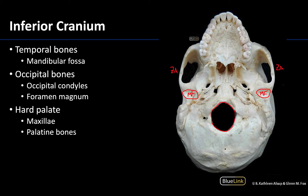Moving back to the occipital bone, here is that large foramen magnum. The foramen magnum is the second largest foramen in the body — the largest being the obturator foramen, which we'll see when we get to the pelvic girdle region. It is here that we get the transition from the medulla oblongata into the spinal cord at the foramen magnum. Cranial nerve 11, the accessory nerve, also ascends through the foramen magnum before exiting again through the jugular foramen.